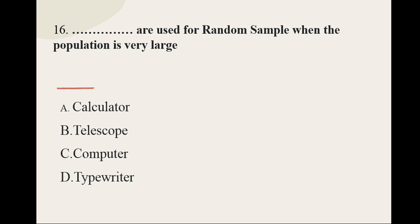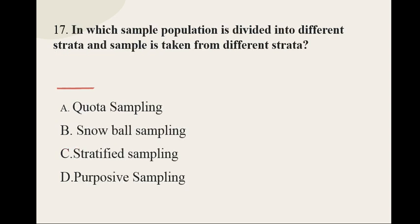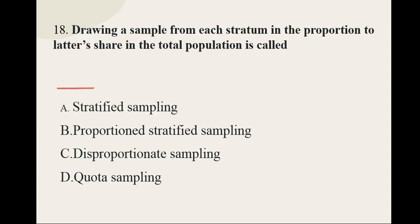Question number sixteen: Blank are used for random sampling when the population is very large — options are: calculator, telescope, computer, typewriter. The correct option is computer. Question number seventeen: In which sample the population is divided into different strata and sample is taken from each stratum — the correct option is stratified sampling. Question number eighteen: Drawing a sample from each stratum in proportion to its share in the total population is called proportionate stratified sampling.